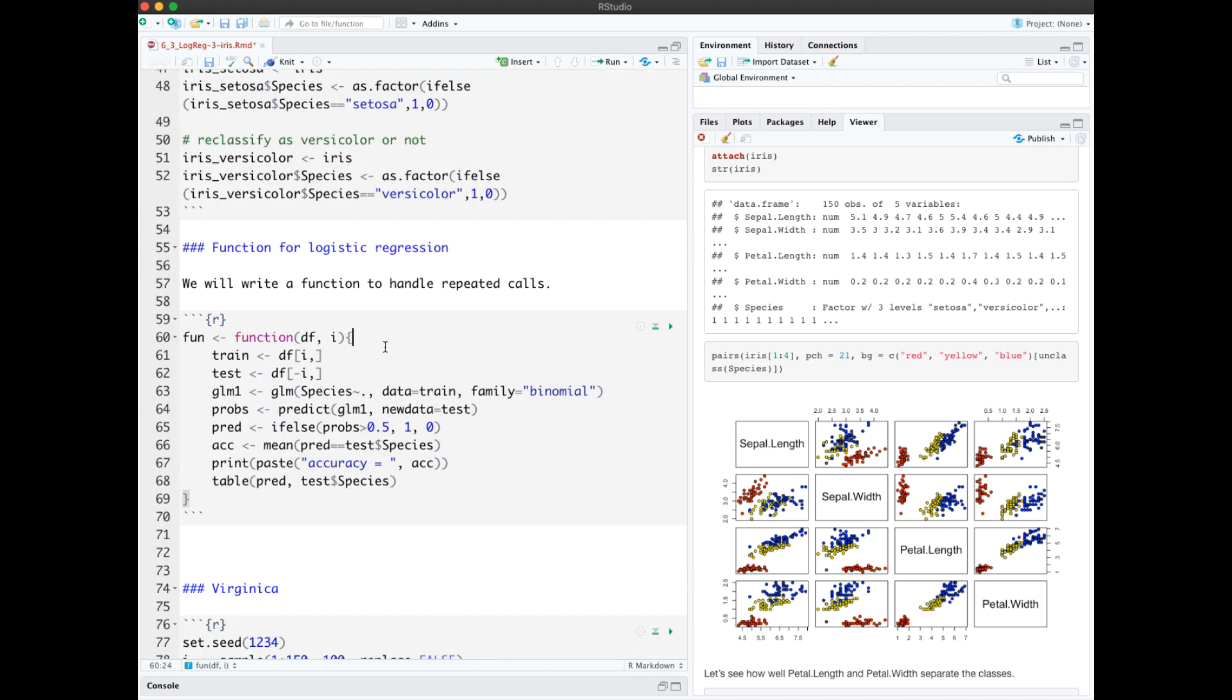Here I'm building a function that will work with all three of those datasets to predict species from the predictors, extract the probabilities, classify one or zero, and measure and output accuracy and the confusion matrix.